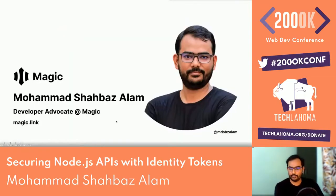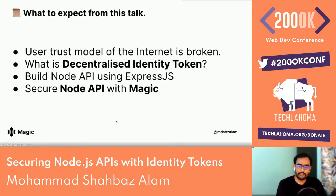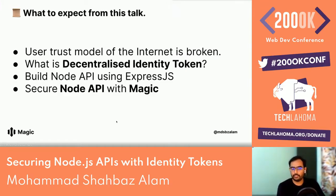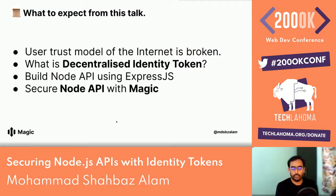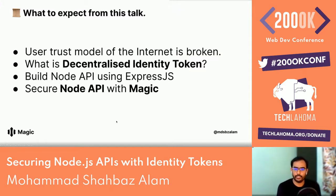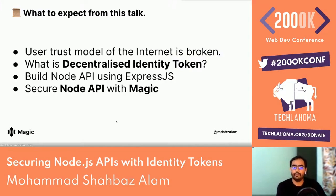I'm a developer advocate at Magic. Here's what to expect from this talk: we'll go from understanding how the user trust model of the internet is broken, to what a decentralized identity token is, then we'll build a node API using Express.js and secure those APIs with Magic.